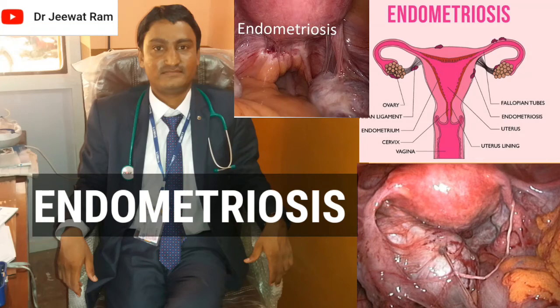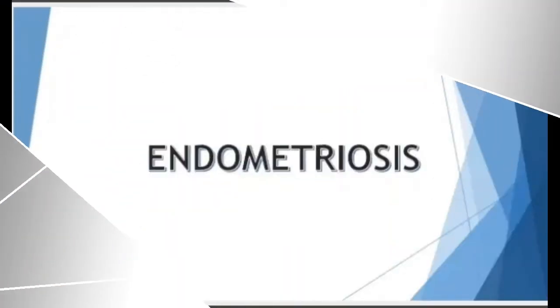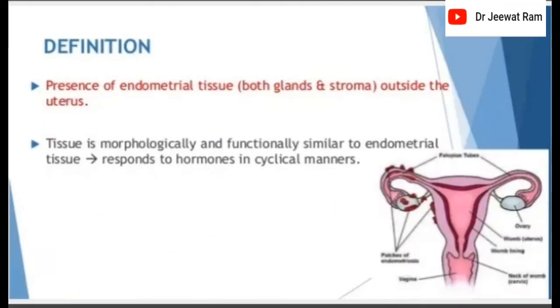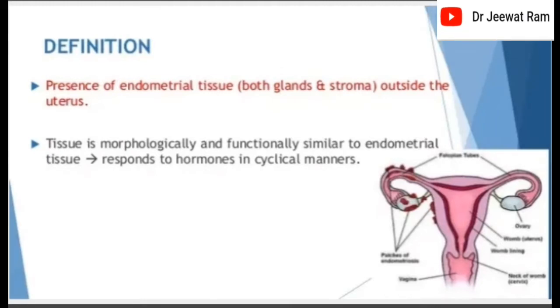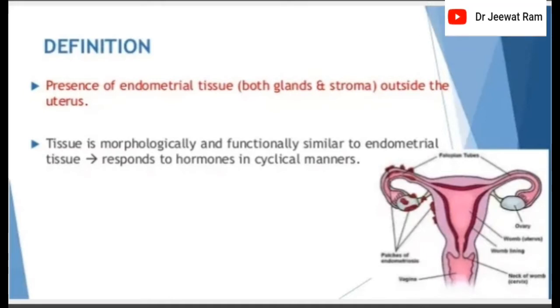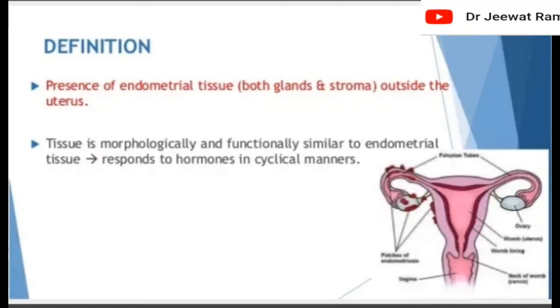Hi friends, I'm Dr. Jeeva Tram. Today I will discuss about endometriosis and its treatment. The definition of endometriosis: the presence of endometrial tissue, both glands and stroma, outside the uterus. Tissue is morphologically and functionally similar to endometrial tissue and responds to hormones in a cyclical manner.